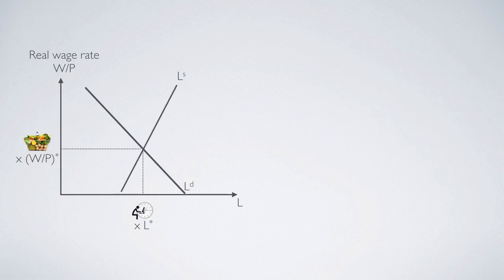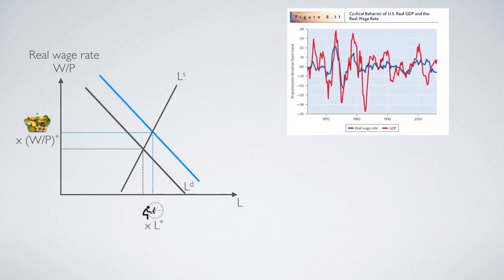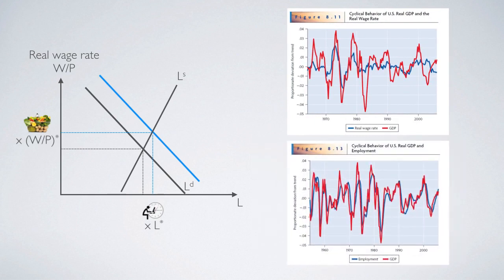Then we move to the labor market. When those good things happen and drive up labor demand, it implies that the equilibrium wage and labor input will increase as well. Therefore, both variables will increase together with the increase of output, meaning we will observe that the real wage rate in an economy will be procyclical, and also employment in an economy will be procyclical as well.